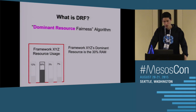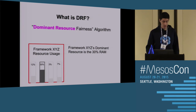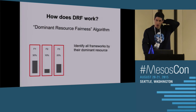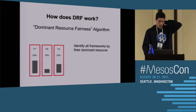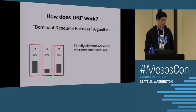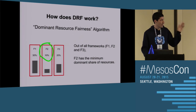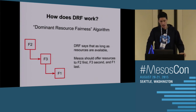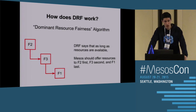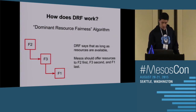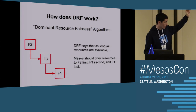From that representation, you say the dominant resource is the one with the highest bar. So framework XYZ's dominant resource is 30% RAM. If you do this for all frameworks running on Mesos at a given point in time, you can identify all frameworks by their dominant resource. Framework one has the most and framework two has the least. DRF basically says: offer resources to the framework with the lowest minimum dominant share — so framework two first, then three, then one.